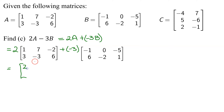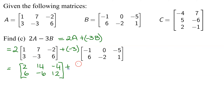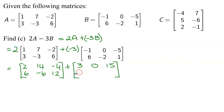For two times matrix A: two times one is two; two times seven is fourteen; two times negative two is negative four; two times three is six; two times negative three is negative six; and two times six is twelve. Then adding negative three times matrix B: negative three times negative one is positive three; negative three times zero is zero; negative three times negative five is fifteen; negative three times six is negative eighteen; negative three times negative two is positive six; and negative three times one is negative three.